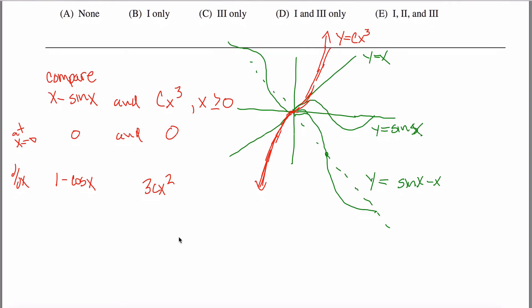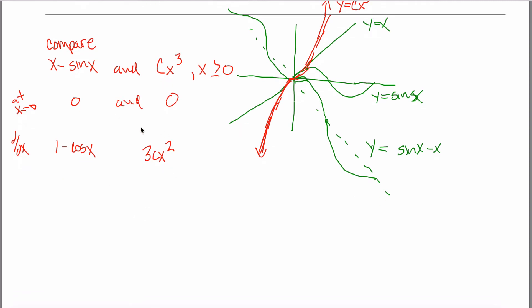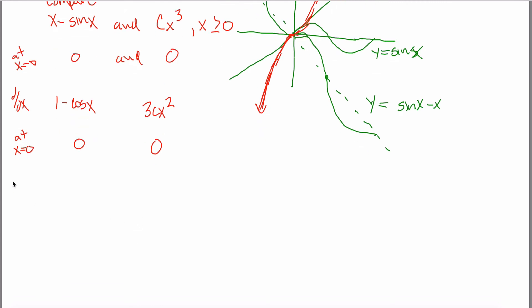At x = 0, 1 - cos(0) = 1 - 1 = 0, and 3c·0² = 0, so the derivatives also start at the same spot. Let's take another derivative: the derivative of 1 - cos(x) is sin(x), and the derivative of 3c·x² is 6c·x.